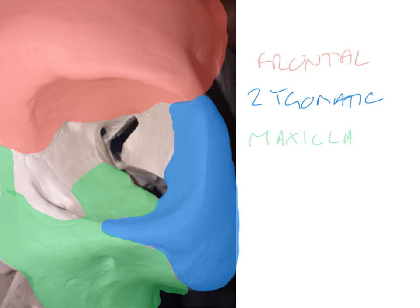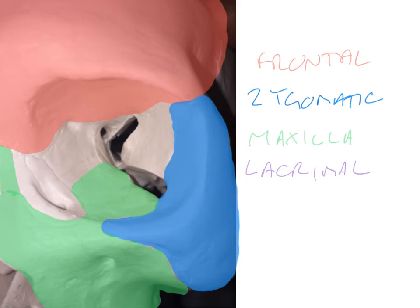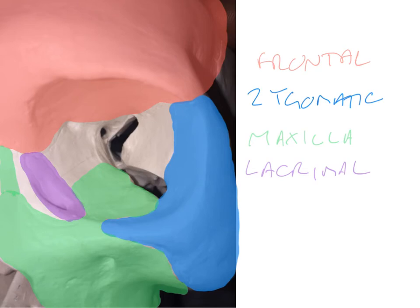The maxilla also has nasal processes extending up towards the frontal bone, giving it important relations to the nasal cavities as well. The next important bone encircling the outermost part of the orbit is the lacrimal bone. The lacrimal bone is very important since it contains the nasolacrimal duct, which assists with the drainage of tears. It's a very small, irregularly shaped bone sitting in approximately this region here, with the maxilla immediately anterior to it.